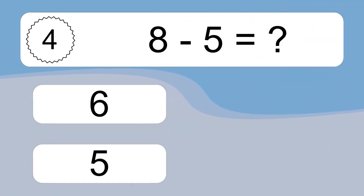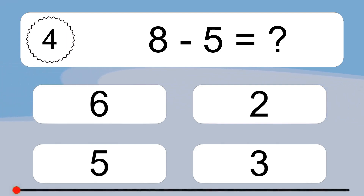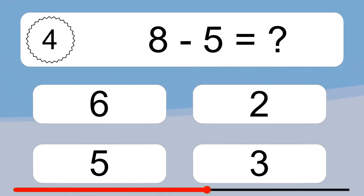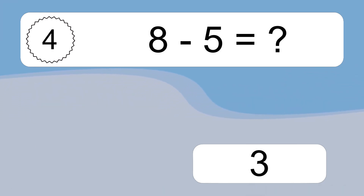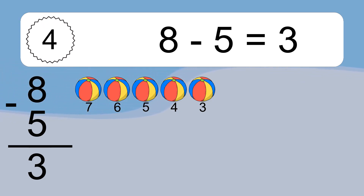8 minus 5 equals what? 8 minus 5 equals 3. Let's count it. 7, 6, 5, 4, 3.